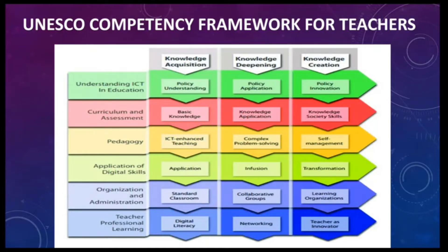In the UNESCO Competency Framework for Teachers, there are three levels and six aspects. In each aspect, there are three levels, totaling 18 competencies for teachers.